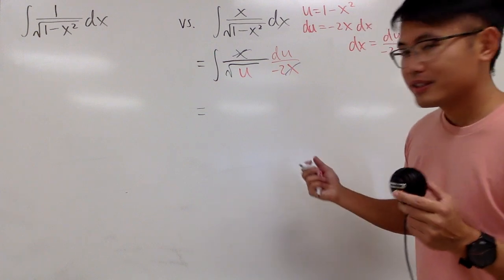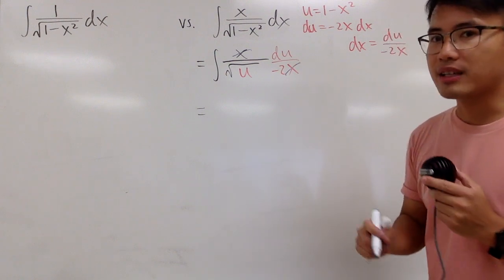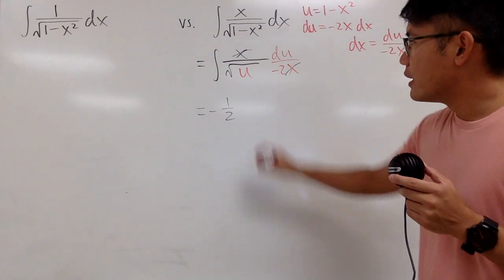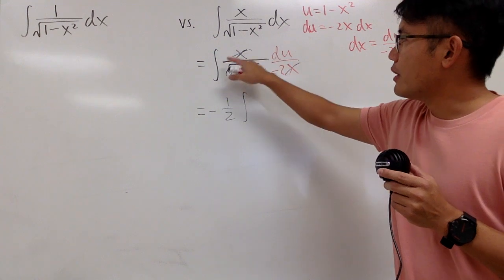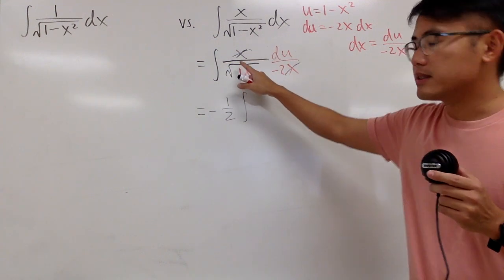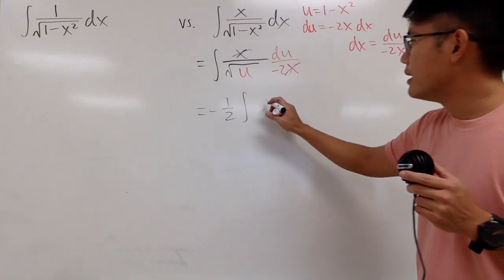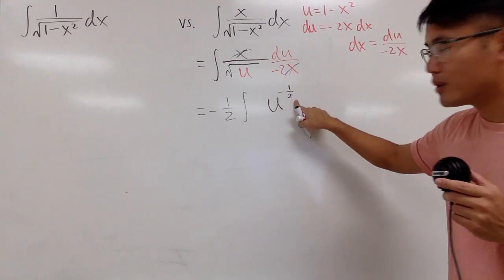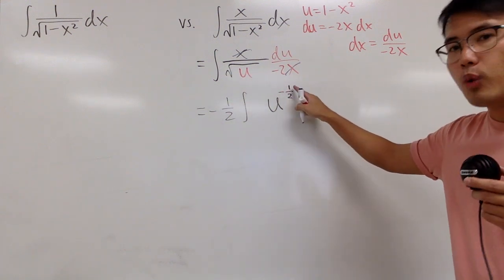The first thing is that I will look at the 1 over negative 2 and bring that to the front, because that's just a constant multiple — so negative one-half in the front, and then the integral. The second thing I will do is rewrite 1 over the square root of u. Remember, the square root is the same as the 1/2 power, but since it's in the denominator, I'm going to bring that up and look at it as u to the negative 1/2 power.